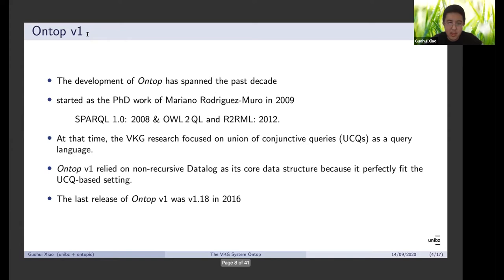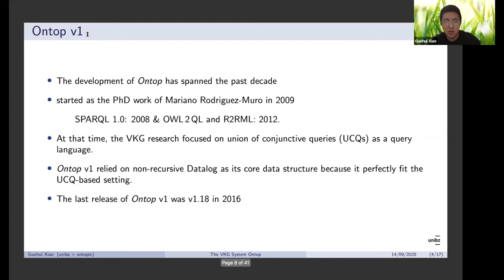The system has been developed over the past decade. It was a really great challenge and a great adventure, because you need to understand the theory behind it and also develop engineering solutions to address them. Initially, this was started as the PhD work of Mariano in 2009. At that time, some standards were there but not quite ready. The first version of SPARQL was released one year later, and OWL 2 QL and R2RML were released three years afterwards.